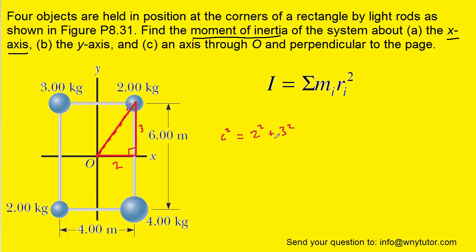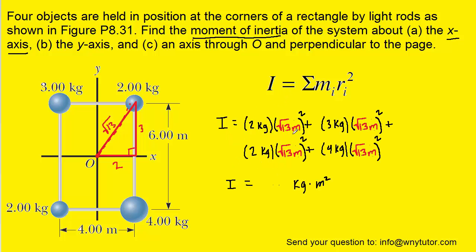So we'll show that work over here and when you calculate c, you should end up with the square root of 13. So that's going to be the distance from the axis of rotation to all four of these objects. With that in mind, we can plug into the formula. And once you've plugged that into the formula and computed it, you should obtain a value of 143 kilogram meters squared.